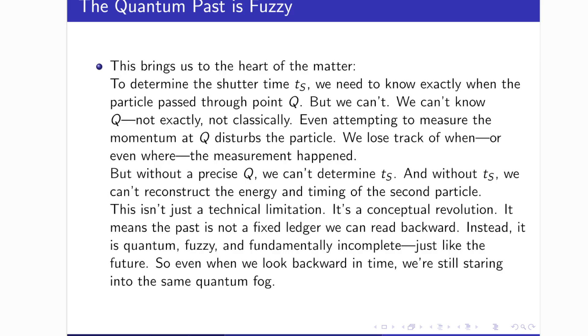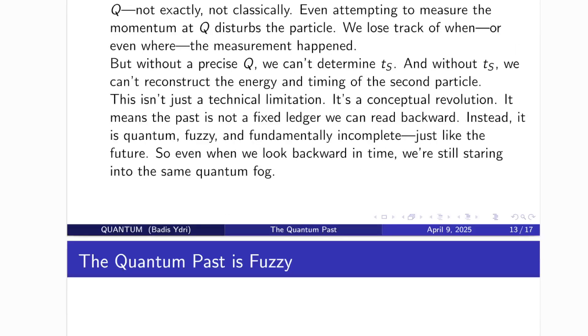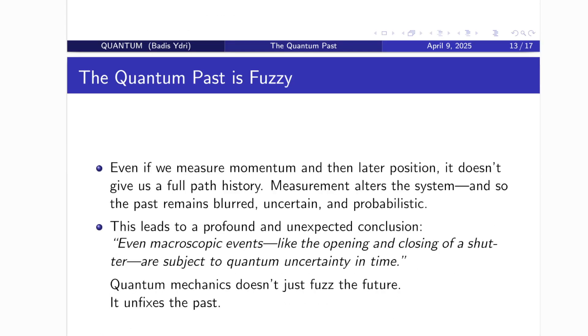This is not a technical oversight. It is a conceptual revolution. It tells us something profound. The past is not a fixed record we can read backwards. It is quantum, fuzzy, incomplete, just like the future. Even when we look backward in time, we are still staring into the same probabilistic mist. Even if you try to measure momentum now and position later, it still doesn't give you the full history. Because the act of measurement itself disturbs the system. The result? The past remains blurred. Uncertain. Probabilistic.